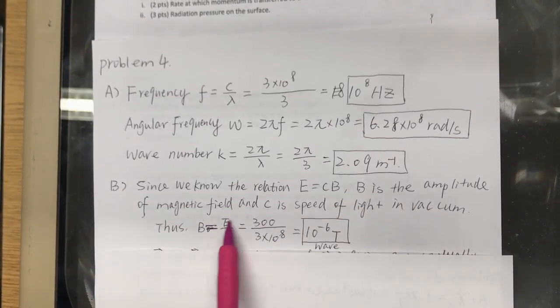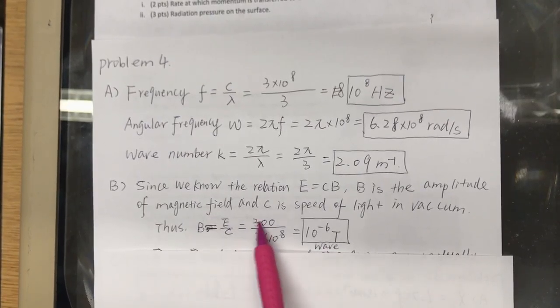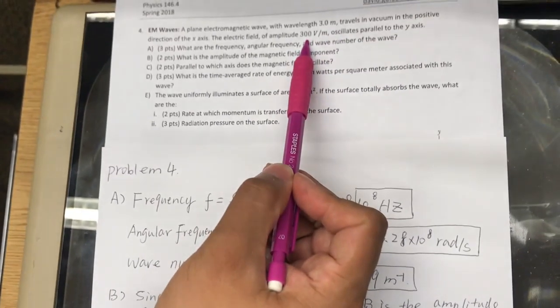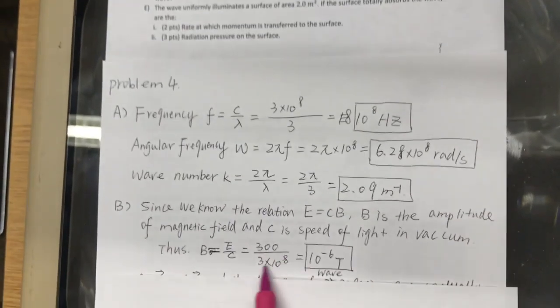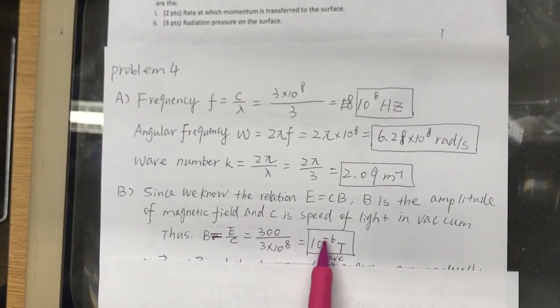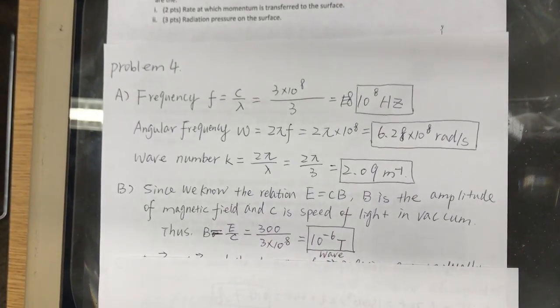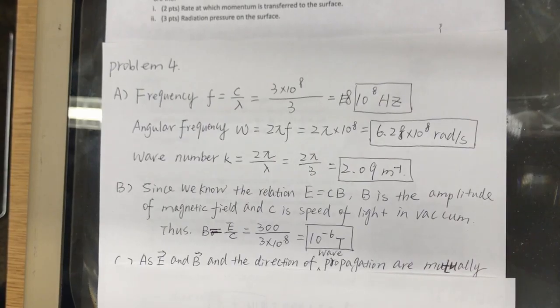Plug-and-chug. B equals electric field over speed of light, 300, because that's a given, 300 volts per meter, divided by the speed of light, we get 10 to the minus 6 Tesla.